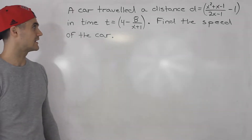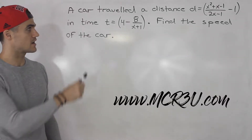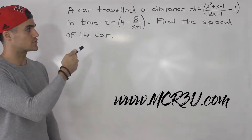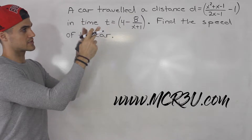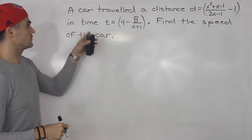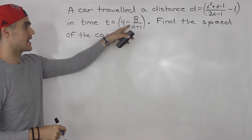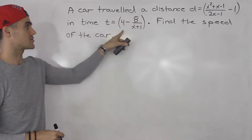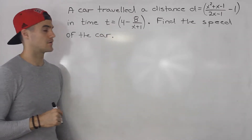Welcome back. In this question, we're told a car traveled a distance of x squared plus x minus 1 over 2x minus 1, minus 1. That whole expression represents the distance. They traveled that distance in a time of 4 minus 8 over x plus 1. This entire expression represents the time. We have to find the speed of the car.